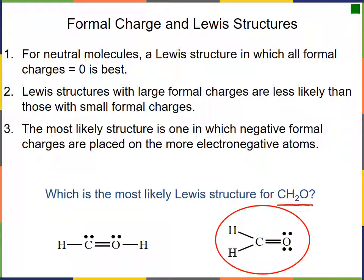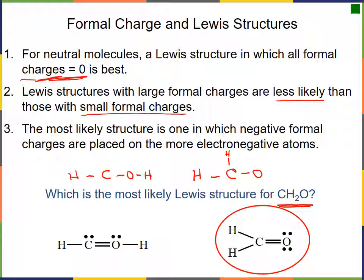Let's find the best Lewis structure for CH₂O. We know carbon goes in the center and hydrogens on the outside. We have two options: both hydrogens on carbon with a double bond to oxygen, or one hydrogen on the oxygen. We then compare formal charges. For neutral molecules, the best Lewis structure is the one where all formal charges are zero. Structures with large formal charges are less stable.